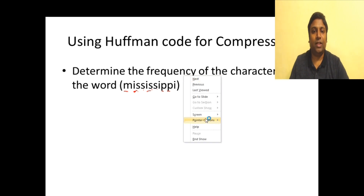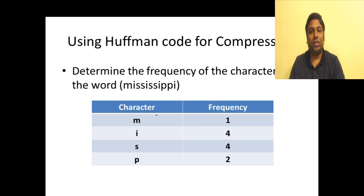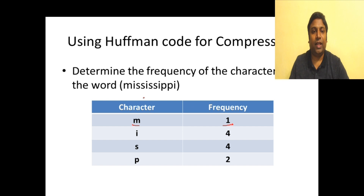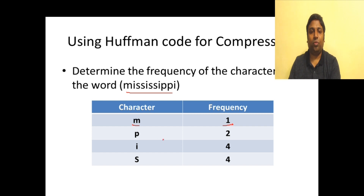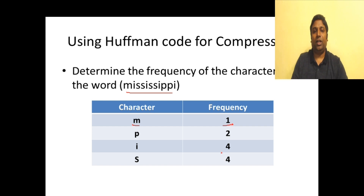I have already constructed the table. This is the table containing the character and the frequency of the character in this particular string. The next step is we will sort this using the values in ascending order. So we have 'm' occurring once, 'p' two times, then 'i' four times, and 's' four times.